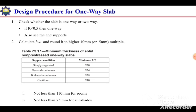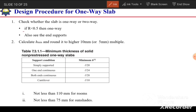Welcome to Engineering Studio with Dr. Muhammad Tahir. In this video we are going to discuss the procedure for design of a one-way slab. Once we are given a slab or slab system, we first need to check whether it is a one-way or two-way slab. For a slab to be considered as one-way, its aspect ratio r should be less than 0.5, where r is the ratio of the shorter span to the larger span.